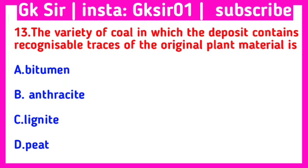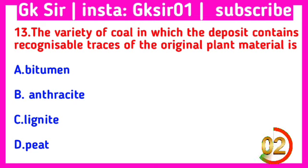Question number 13. The variety of coal in which the deposit contains recognisable traces of the original plant material is — Option A: vitrain, Option B: anthracite, Option C: lignite, Option D: peat. The correct answer is Option D: peat.